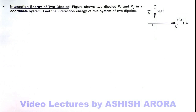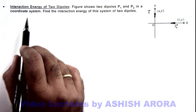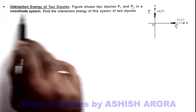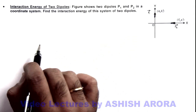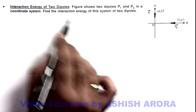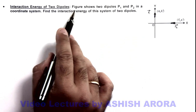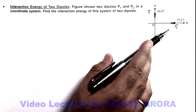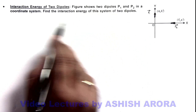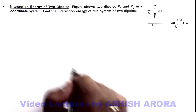In this illustration we are going to evaluate the interaction energy of 2 dipoles. Here we can see a picture and the situation analyzes as: figure shows 2 dipoles p1 and p2 in a coordinate system, and we are required to find the interaction energy of this system of 2 dipoles.